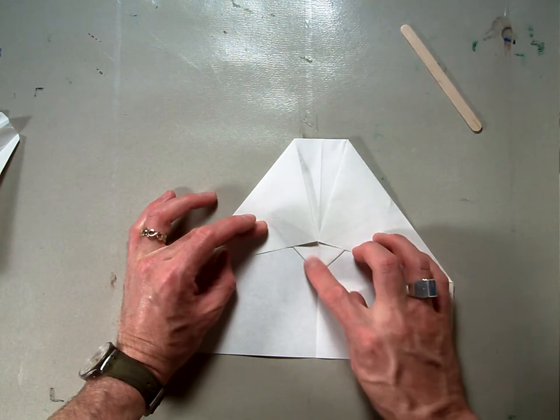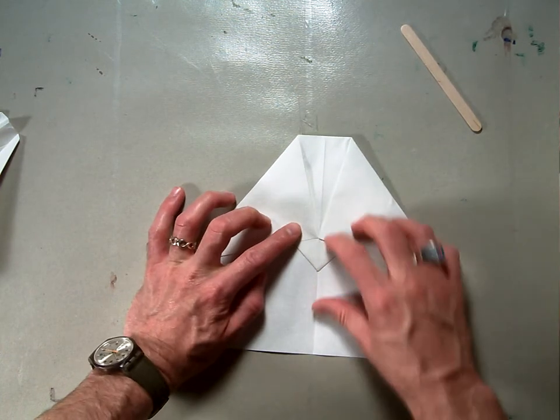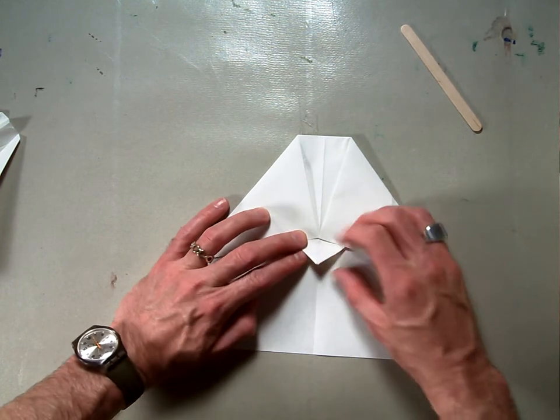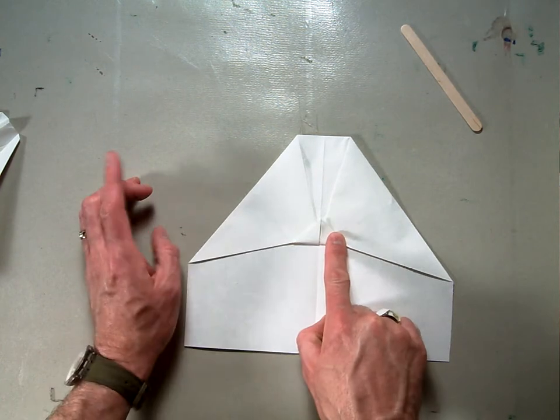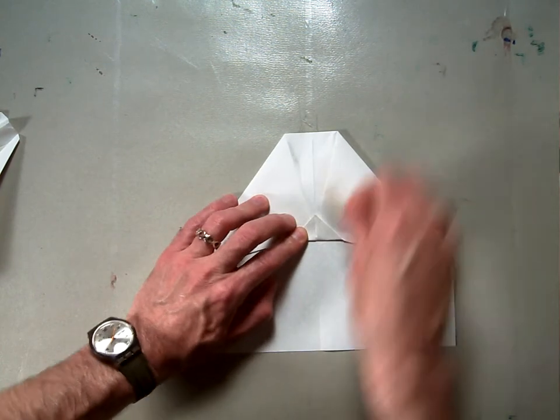Now the remaining piece that's down here you're going to want to take that and valley fold it over those other two corners like that. And that's going to help keep those in place while your airplane is flying.